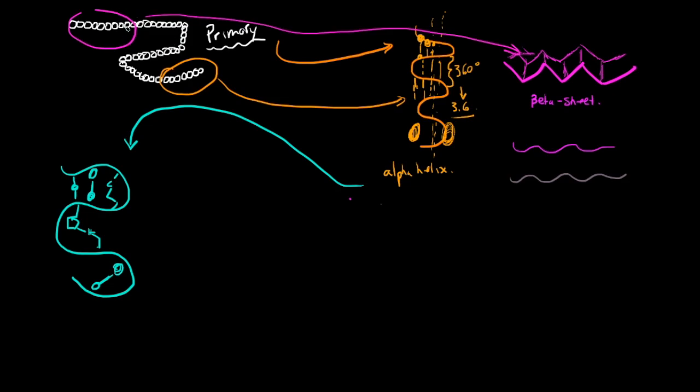So along this whole long chain of amino acids you might have a beta sheet followed by an alpha helix, followed by two more beta sheets, followed by three alpha helices and all these different structures. And then the tertiary structure is what holds all of these together.